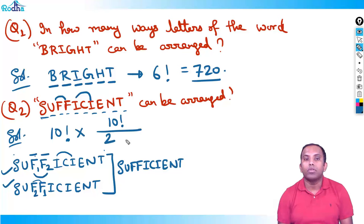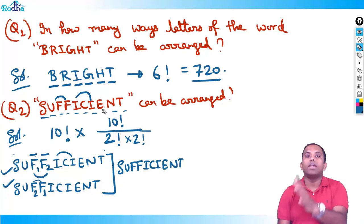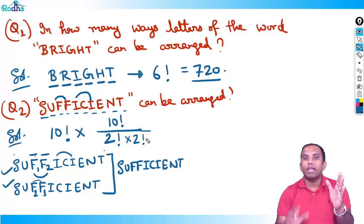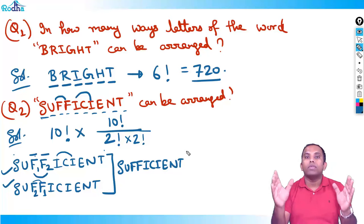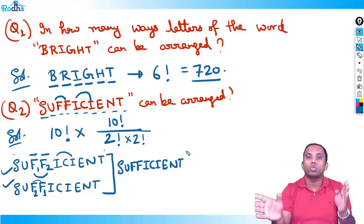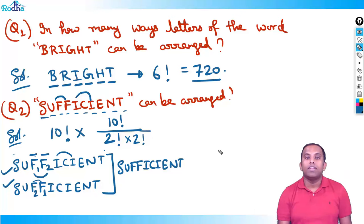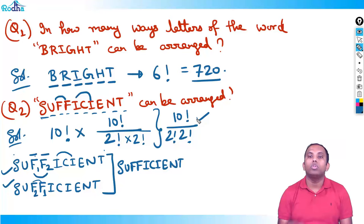Therefore, the answer for SUFFICIENT is: 10! / (2! × 2!). F repeats twice so divide by 2!, and I repeats twice so divide by another 2!. This gives 10! / (2! × 2!) as the final answer.